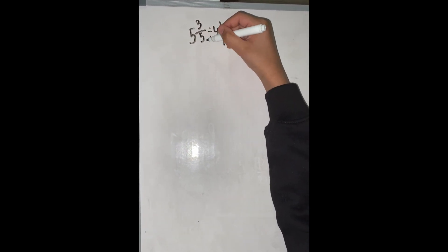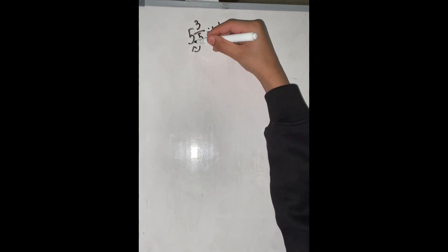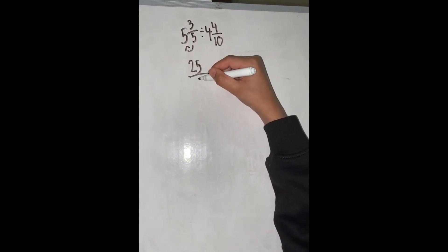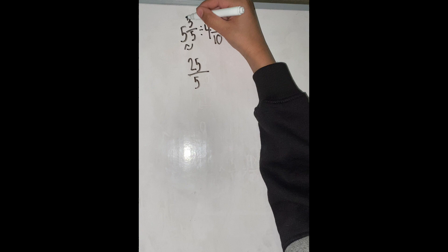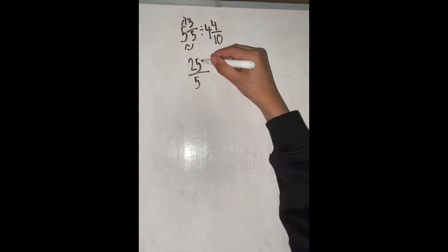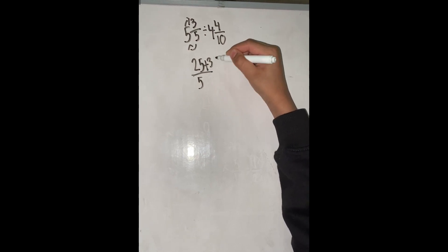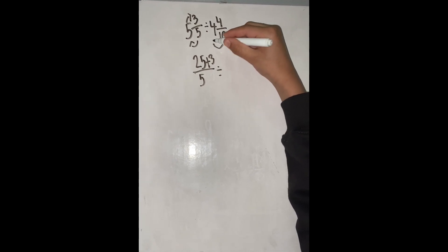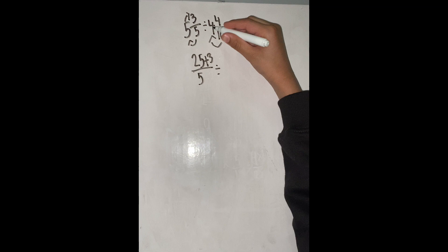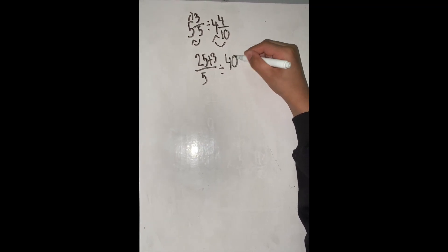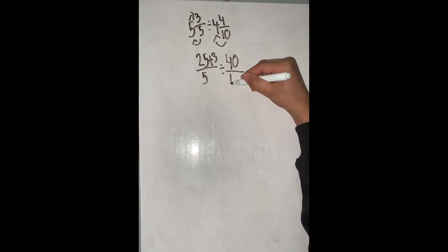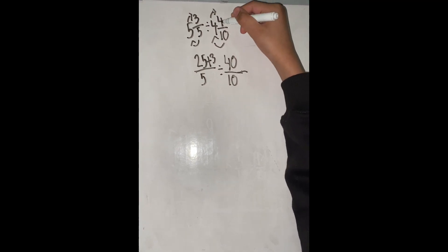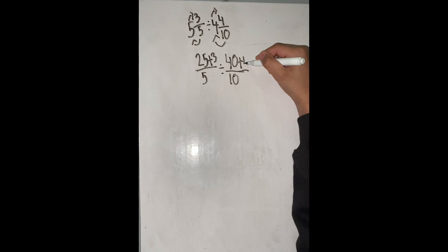5 times 5 is 25, and our denominator is going to be 5 still. And then we are going to add it with 3, so 25 plus 3. Then 10 times 4 is 40, and our denominator is going to be 10. And then we are going to add it with 4, so we are just going to write plus 4.